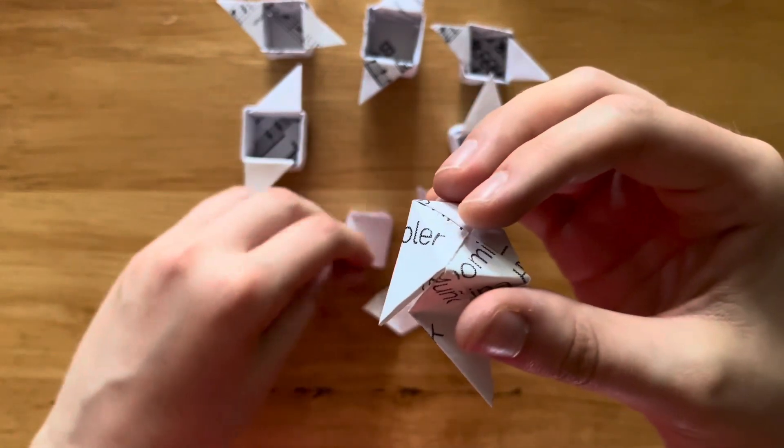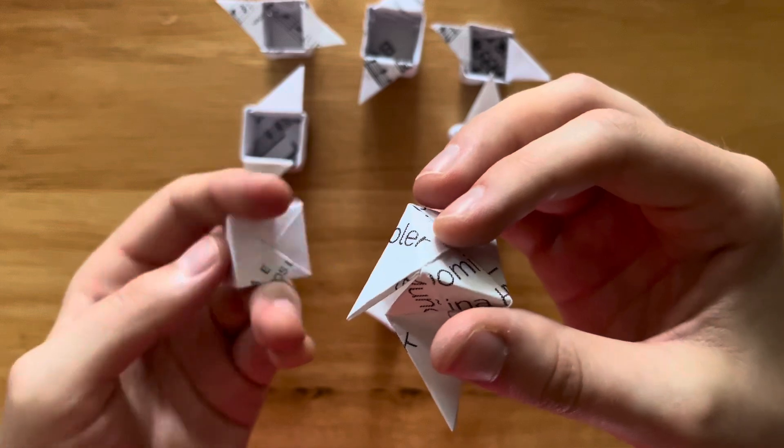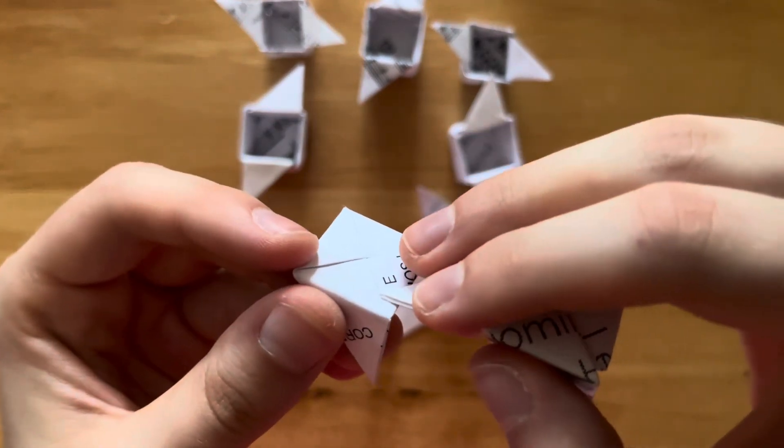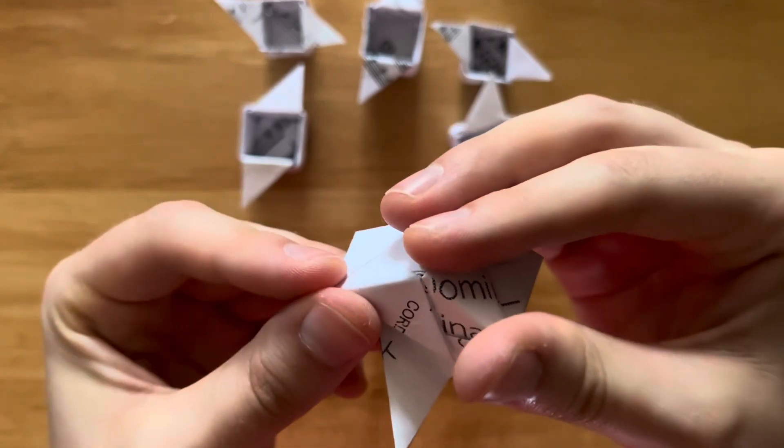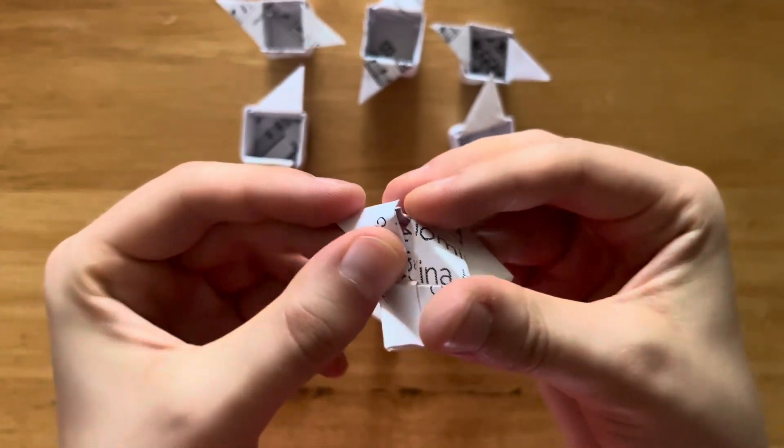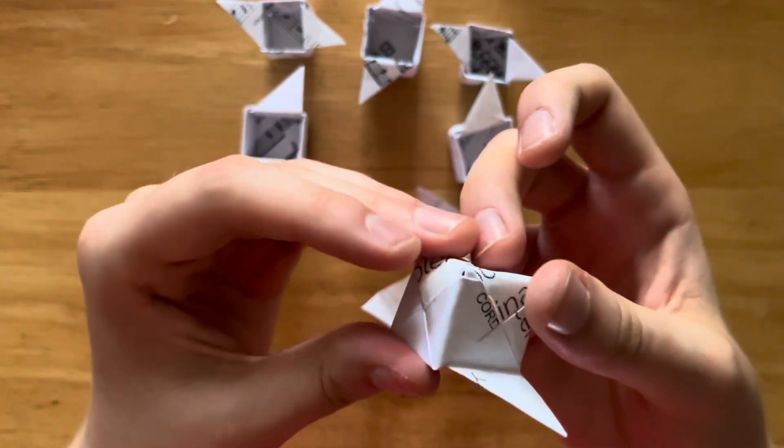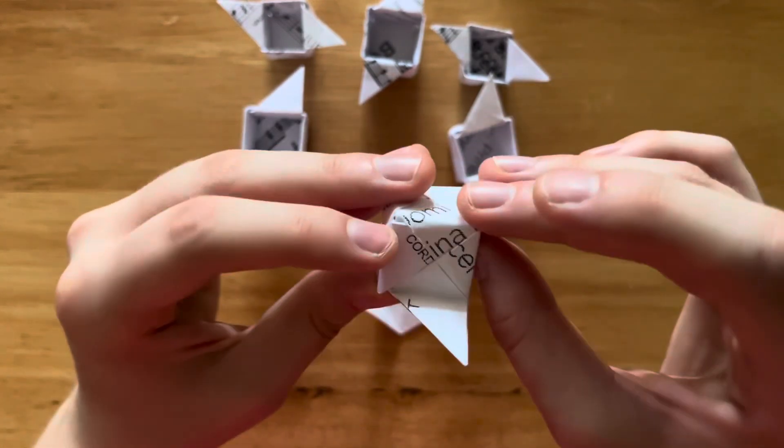Now you're going to take another one of your side units. There is your pocket. You're going to put this tip into the pocket and put this tip into this pocket. There we go.